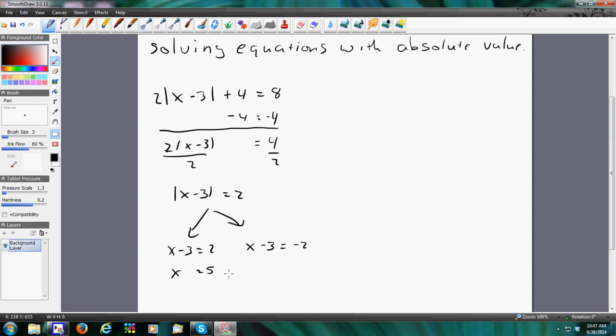So here I'm going to get x equals 5, or x equals 1. And when we plug this in, 5 minus 3 is 2, 2 times 2 is 4, 4 plus 4 is 8. Or I get 1 minus 3 is negative 2, but the absolute value of negative 2 is 2. 2 times 2 is 4, plus 4 is 8.